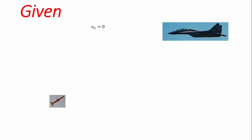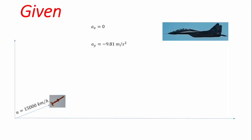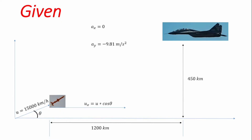Having identified what has been given, we note that we are to neglect air resistance, so the acceleration in the horizontal direction, aₓ, is zero. The vertical acceleration aᵧ is −9.81 m/s². The initial velocity U is 15,000 km/h, the horizontal distance is 1,200 km, and the vertical distance is 450 km. We resolve velocity into components: U cosθ (horizontal) and U sinθ (vertical).